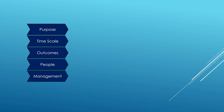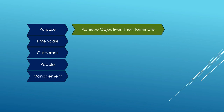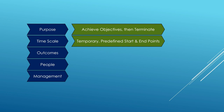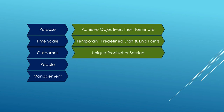We can look at the differences between a project and what we call business as usual, or BAU. Business as usual is anything that isn't a project — everyday activities like stacking shelves, processing invoices, or putting together the monthly board report. Looking at five areas: a project's purpose is to achieve objectives and then terminate, while its timescale is a temporary endeavor with a predefined start and end point.